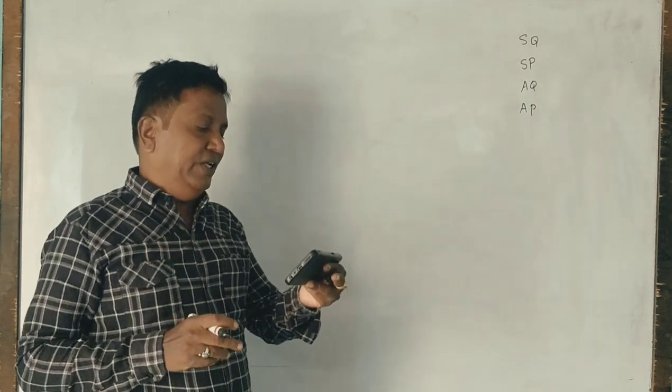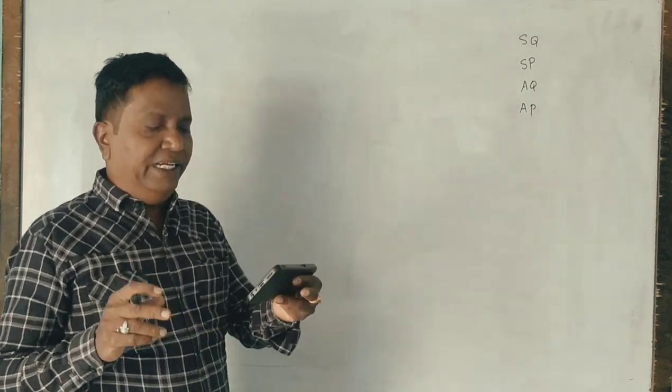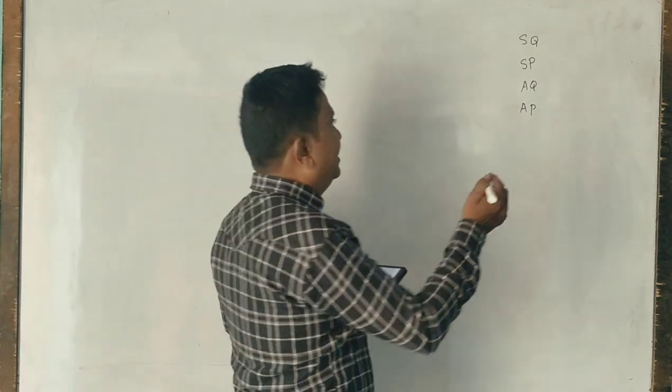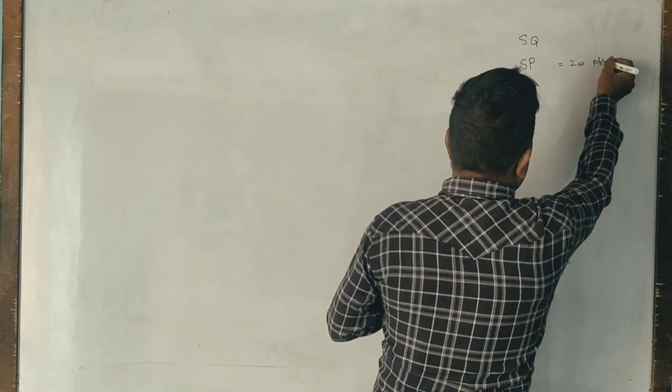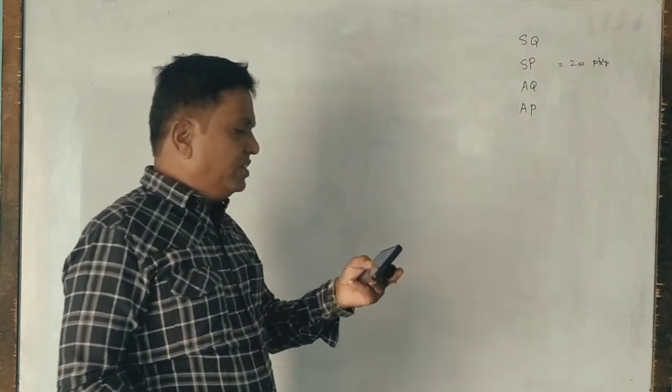What is given? Standard price of material is 20 rupees per kg. The standard price is given as 20 rupees per kg.